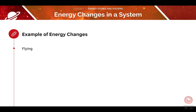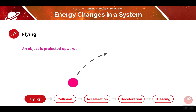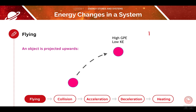Using the energy changes we've just learnt, we'll now apply them to various scenarios — firstly flying, then collisions, acceleration and deceleration, and finally heat. The first scenario is throwing a ball into the air. When a ball is projected upwards, it will gain kinetic energy. As the ball gains kinetic energy, it will rise higher up into the air away from the ground. As it rises higher, the kinetic energy of the ball will be transferred into gravitational potential energy. This is our first transfer.